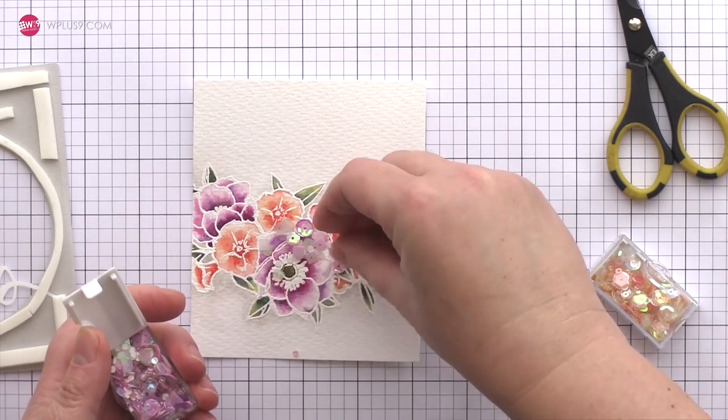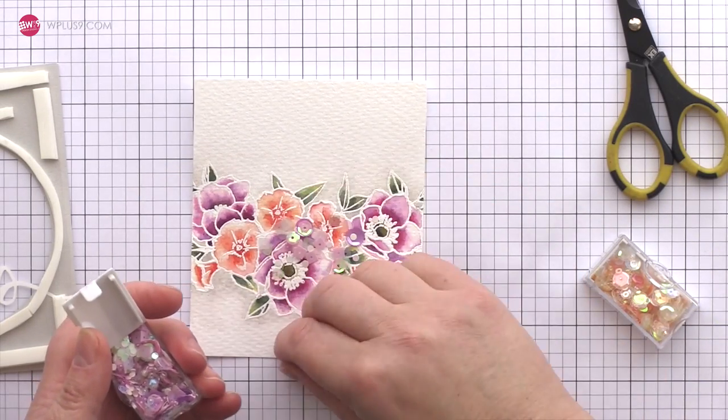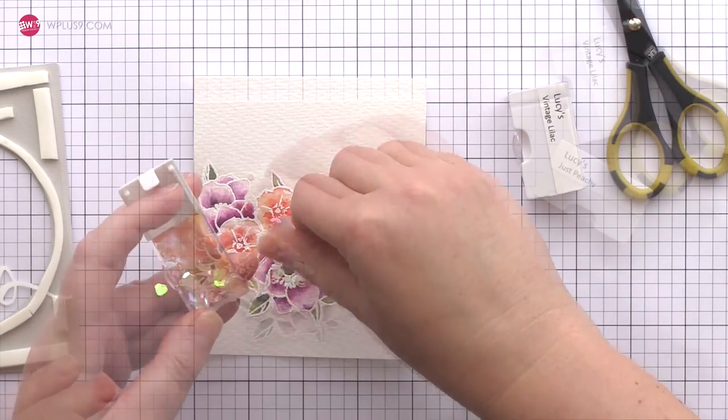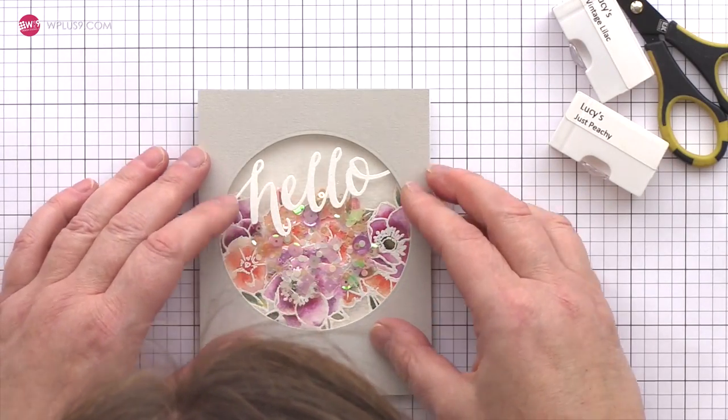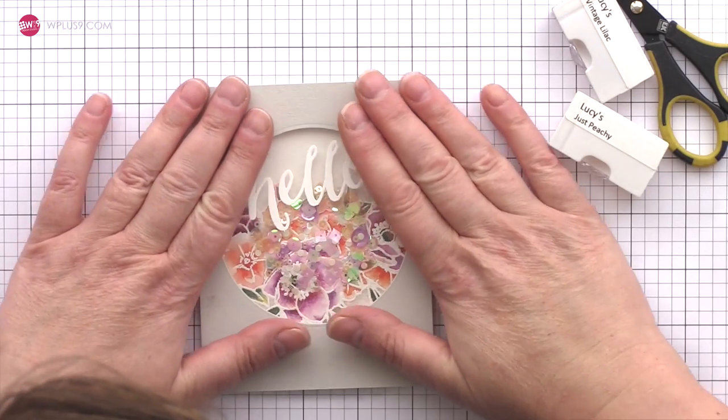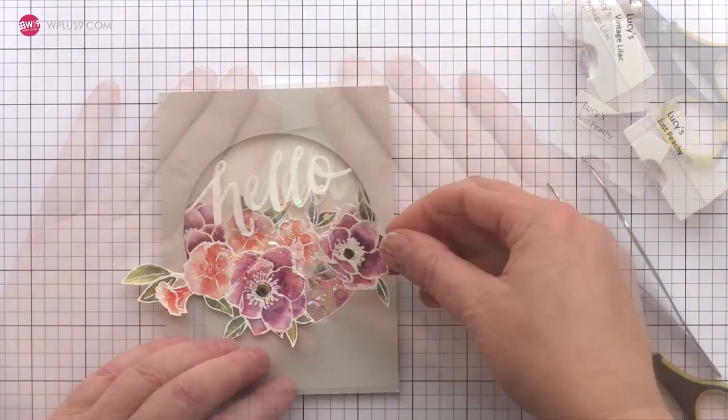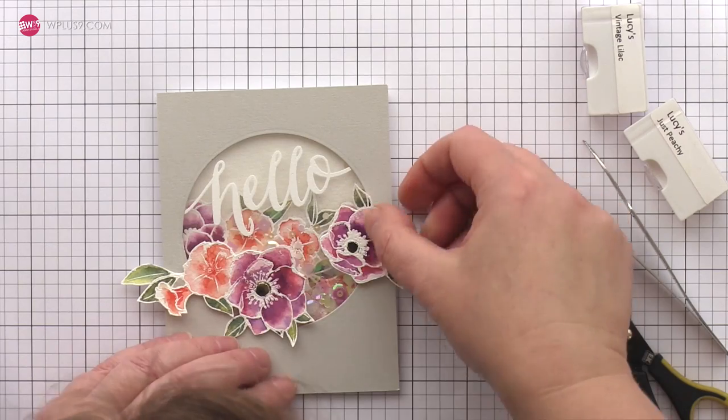I've chosen some sequins which tone with the watercolor and then sprinkling those on top of the watercolor piece. I prefer to add my sequins to this piece and then align the shaker element on top so that I can ensure that I have the flowers showing nicely through the window. I'm adding the flowers to the front of the shaker with foam adhesive for more dimension.